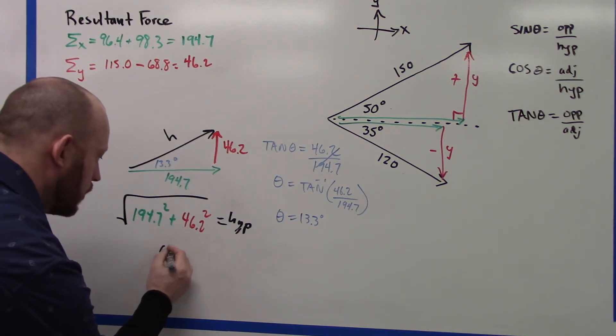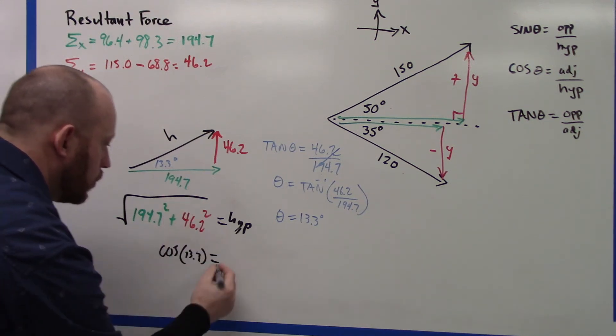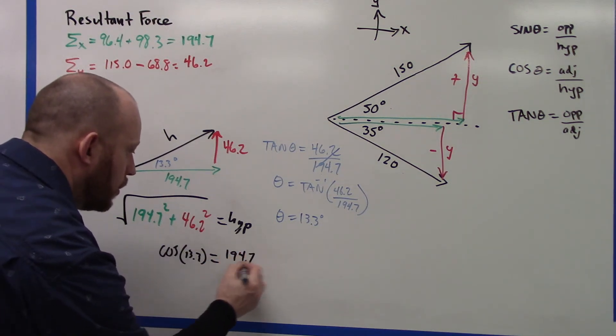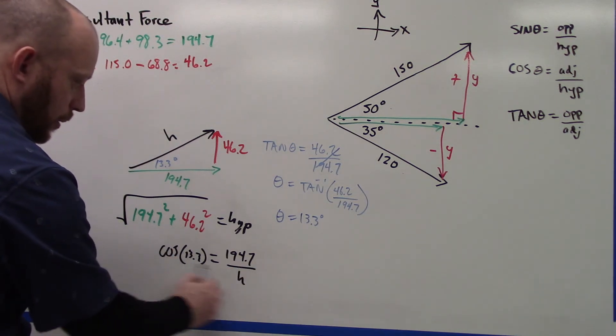So if I said cosine of 13.3 equals 194.7 over H, then I would have to multiply both sides by H and divide both sides by this.